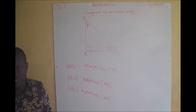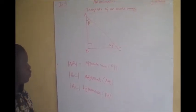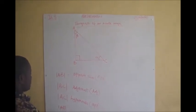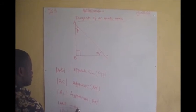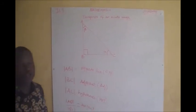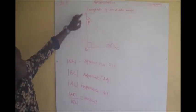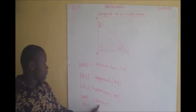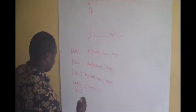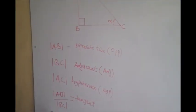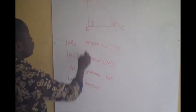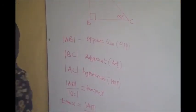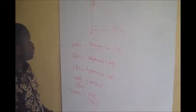In trigonometry, the ratio of line AB divided by line BC is called the tangent. The ratio of line AB divided by line BC — that is opposite over adjacent — is defined as the tangent. In short form, we say that the tangent of this angle is: tan(alpha) = opposite / adjacent = line AB / line BC. That is the definition of tan alpha.